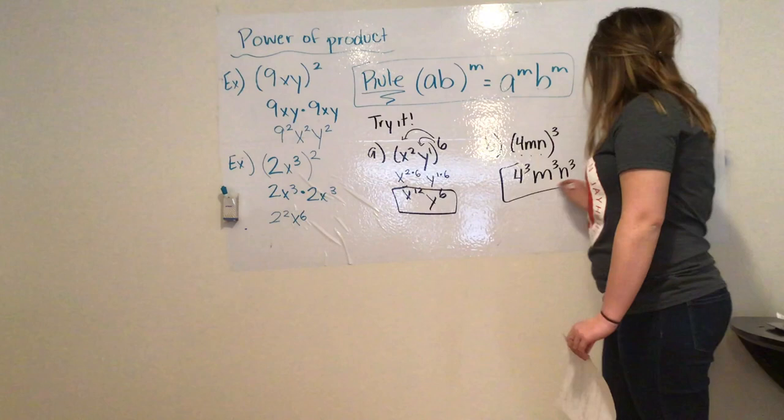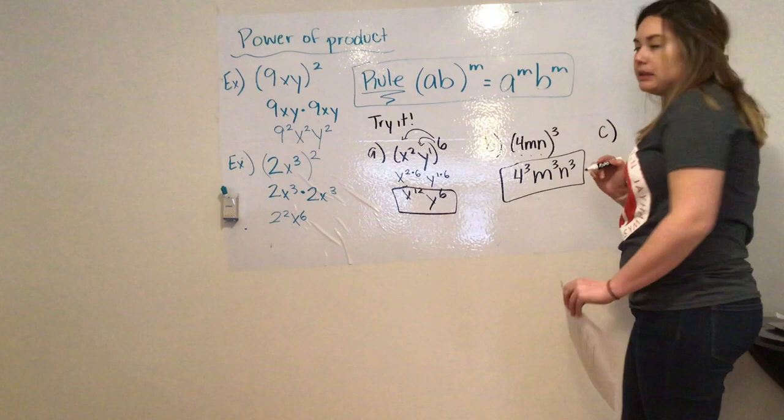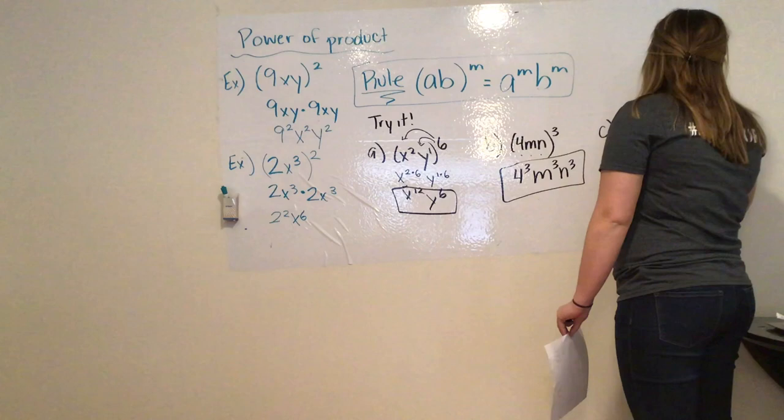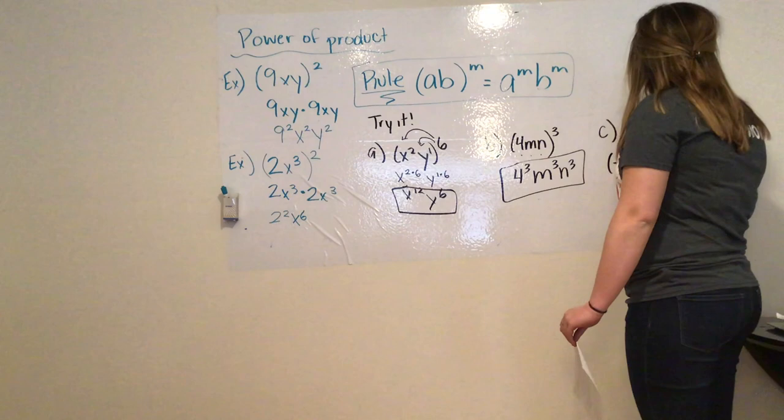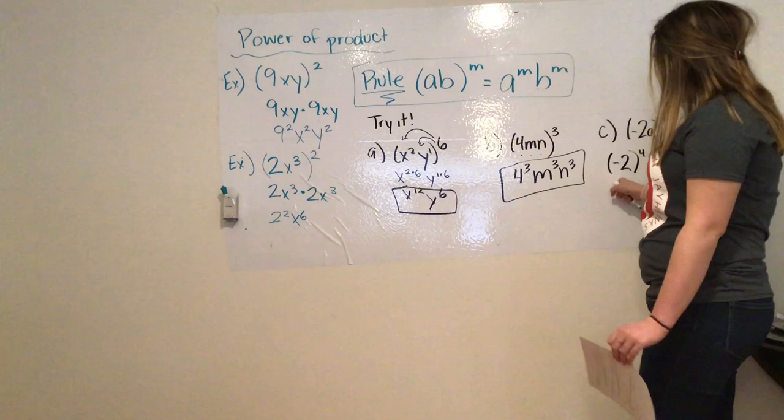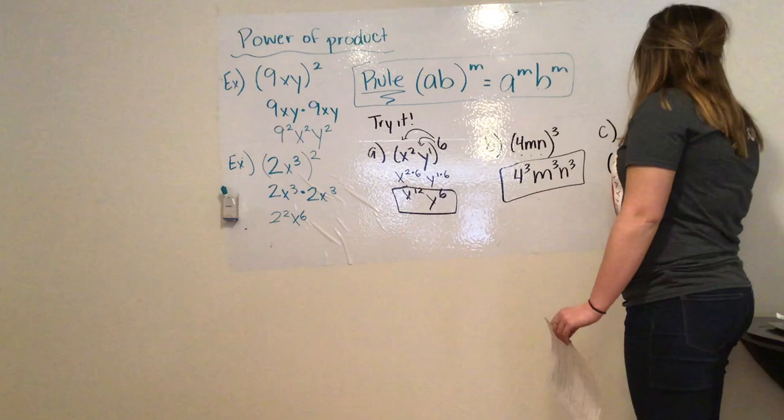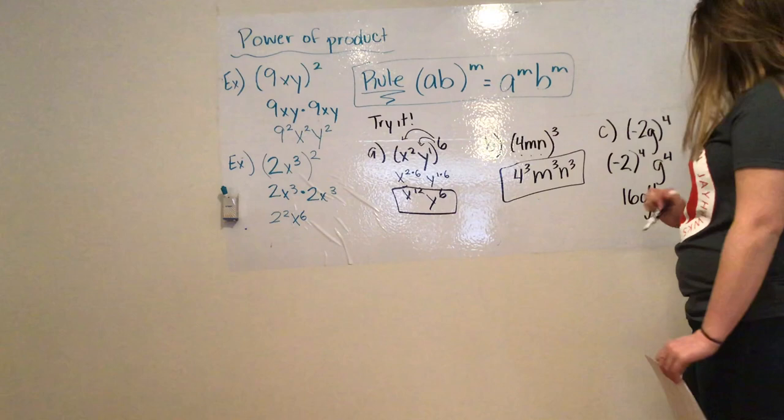All right, moving on. Let's take example C. We have negative 2g to the power of 4. Same thing I'm containing my negative within the parentheses. So, it's negative 2 to the power of 4, and g to the power of 4. And if we were asked to evaluate it, negative 2 to the power of 4 is going to give us a positive 16, which is 16g to the fourth. If I didn't have parentheses contained, this would be a negative 16.